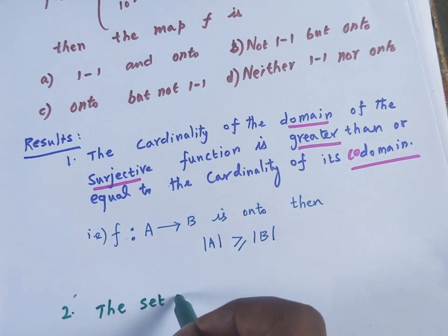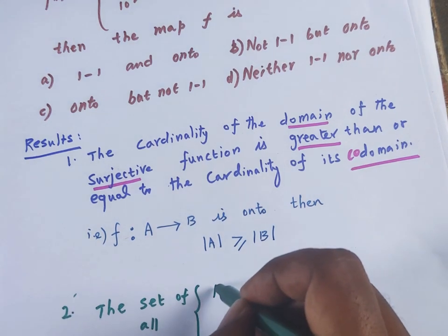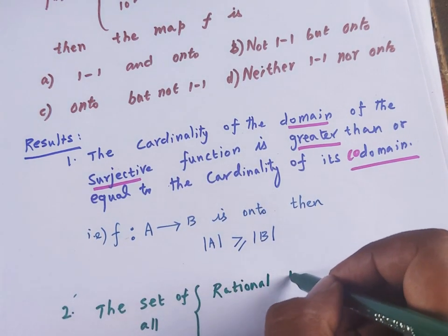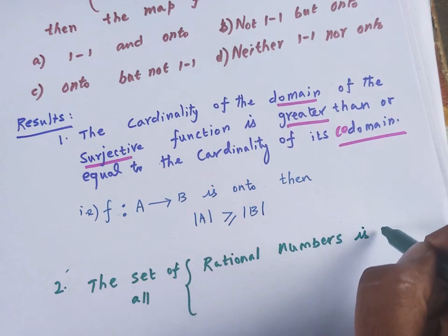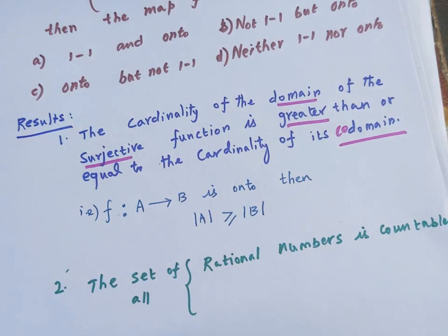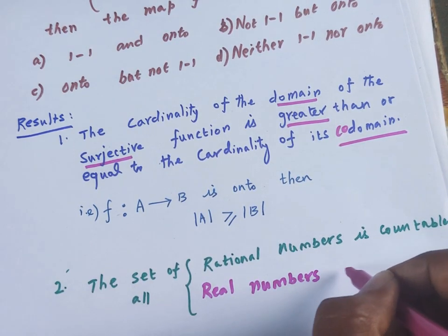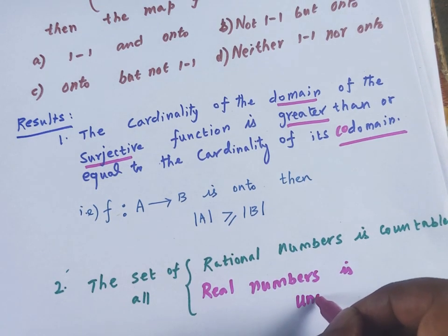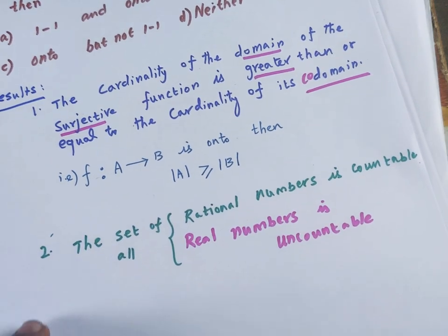Second result: the set of all rational numbers is countable, whereas the set of all real numbers is uncountable. So Q is a countable set and R is an uncountable set.